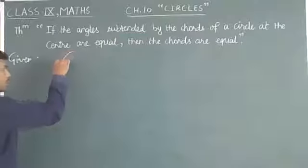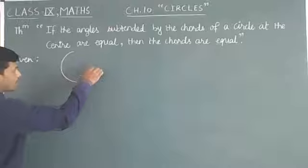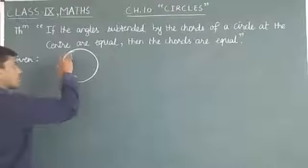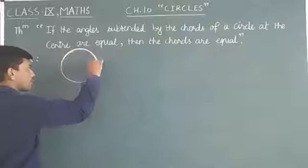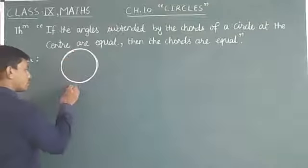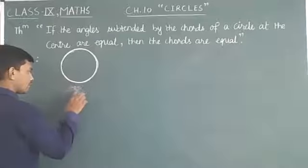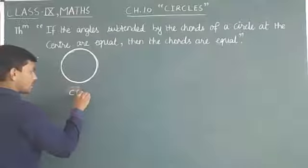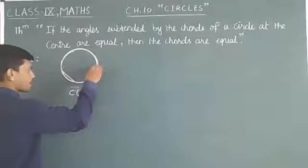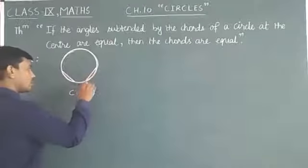Here we are given a circle C with center O and radius R, with two chords AB